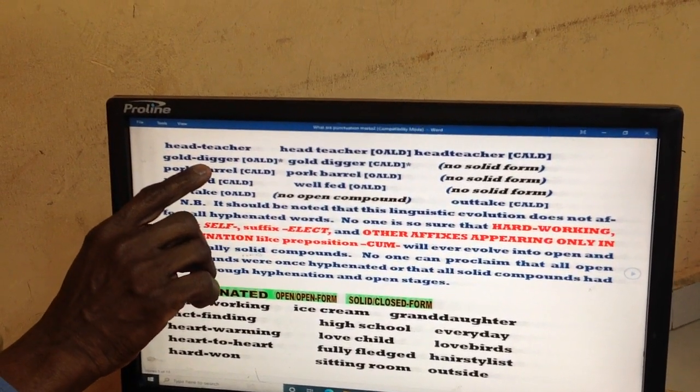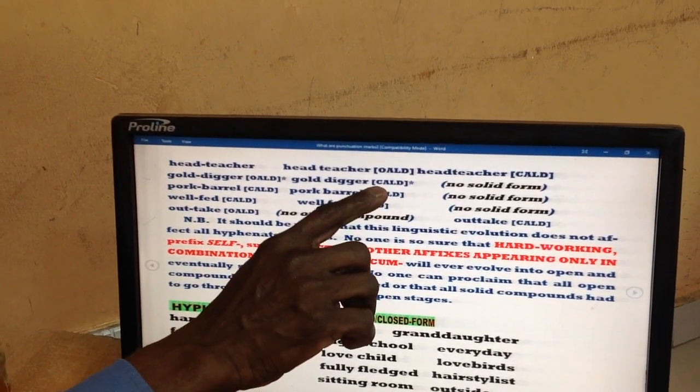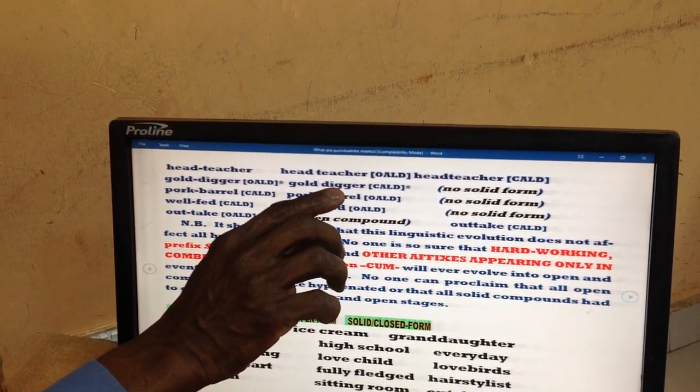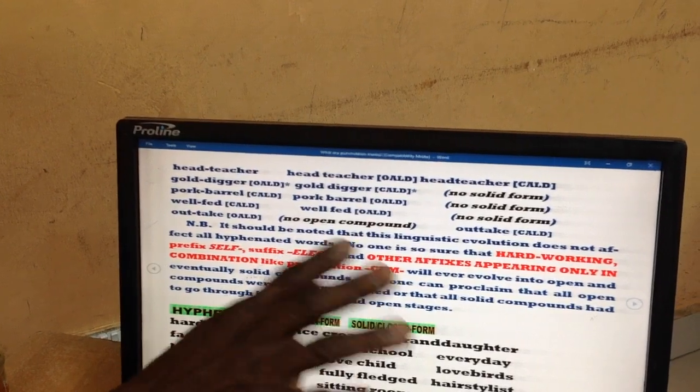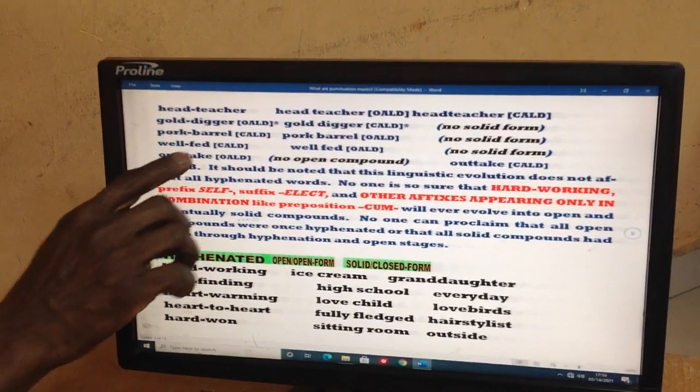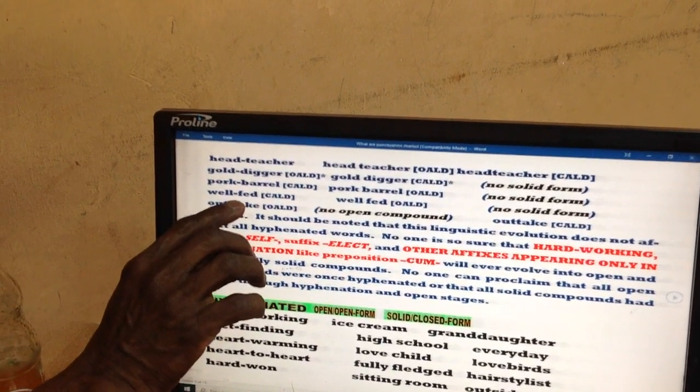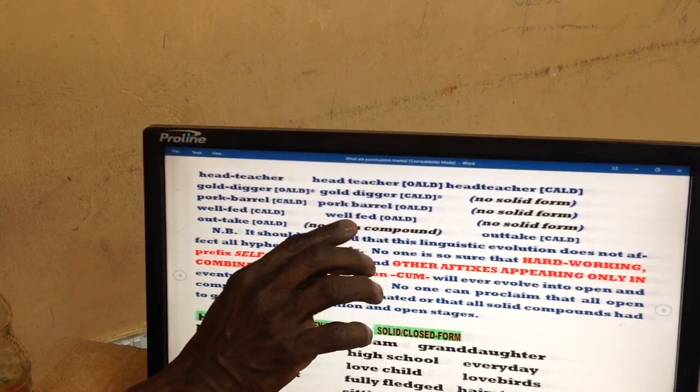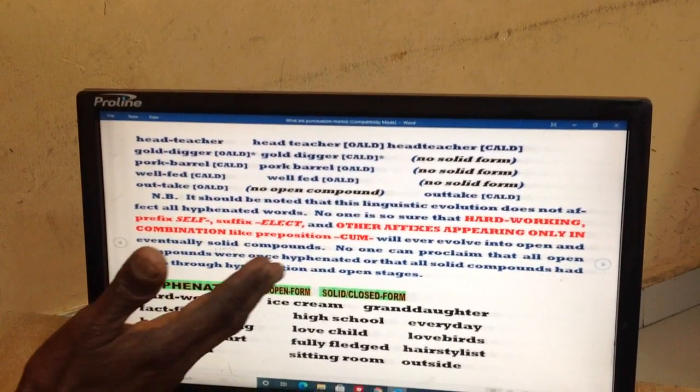If you take the Oxford Advanced Learner's Dictionary, Gold Digger is written still up to now, the 10th edition of Oxford, as a hyphenated compound. But if you take Cambridge Advanced Learner's Dictionary, fourth edition, Gold Digger has moved to the open compound stage, and there is no likelihood that one day it will become a solid compound. The same thing, well-fed, this entry in the Cambridge Advanced Learner's Dictionary is still at the initial stage, which is hyphenated. But when you come to the Oxford Advanced Learners, it is written as an open compound. Whichever you choose, I don't think examiners will penalize you.